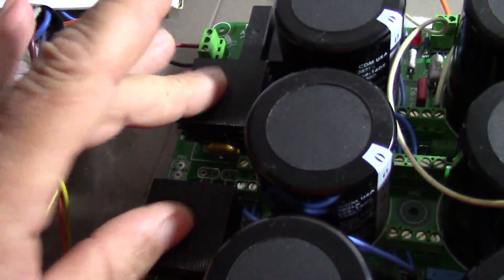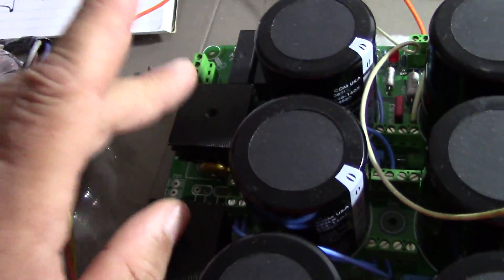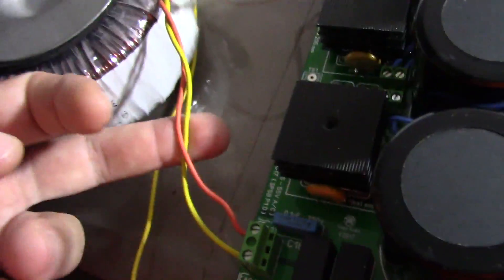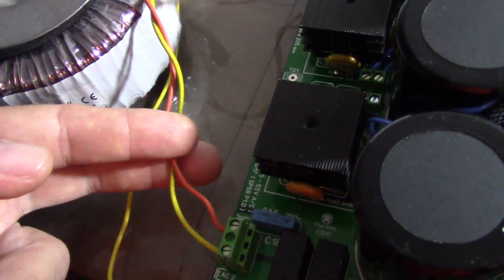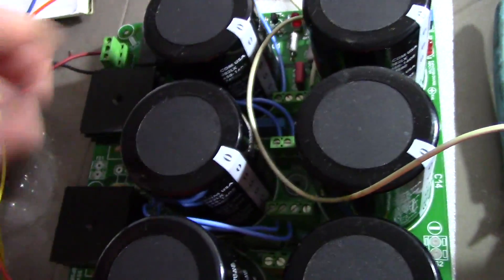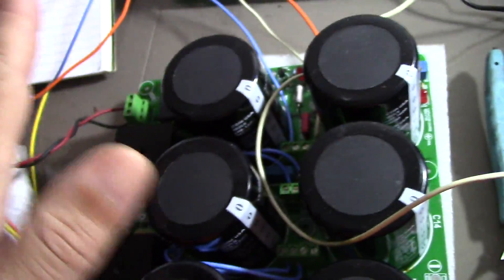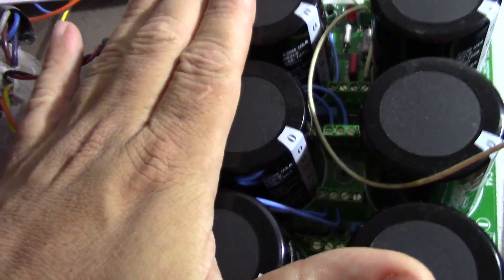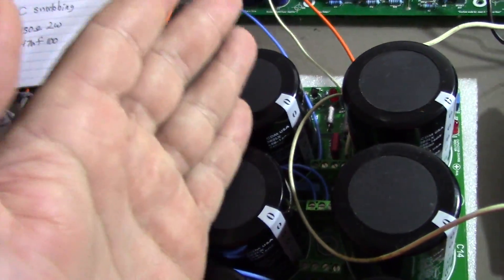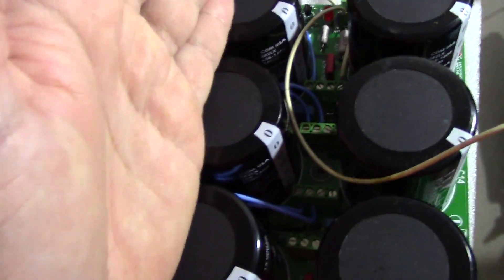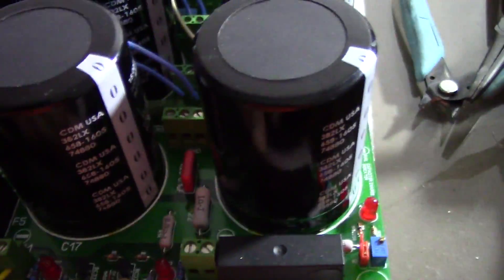The purpose of having two bridge rectifiers is to avoid having the center tap of the power transformer connected to the center of the power supply, which would create the ground. This power supply has one side as the positive rail and the negative rail. We're gonna have the positive here and the negative here.